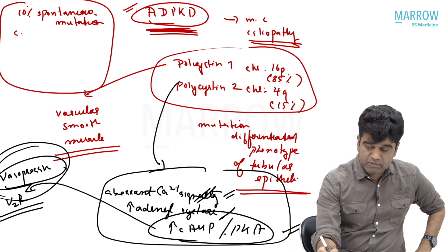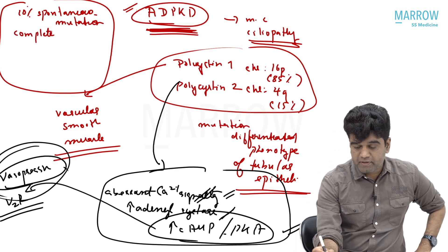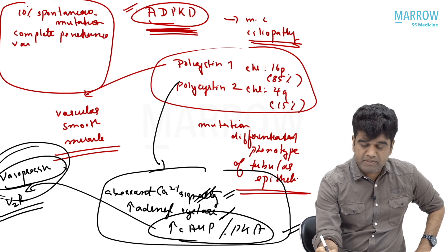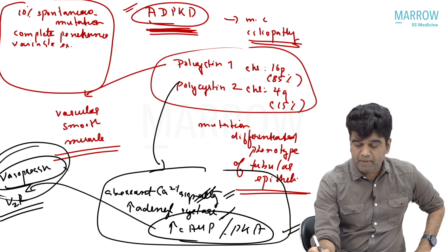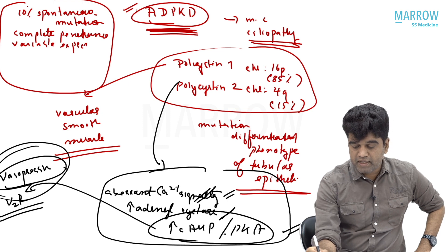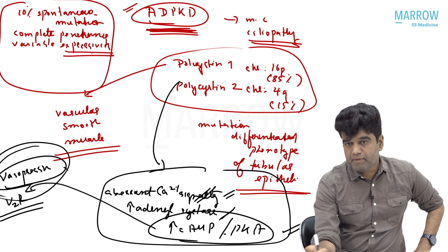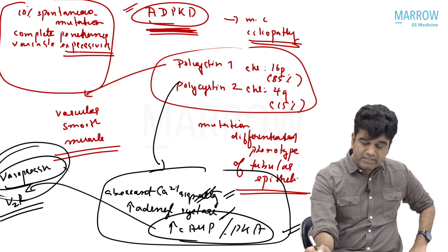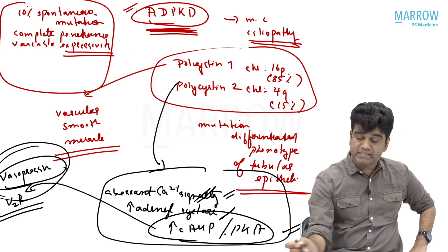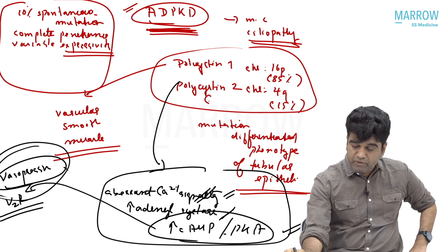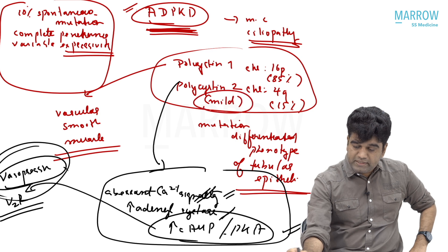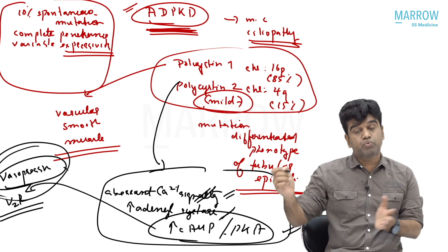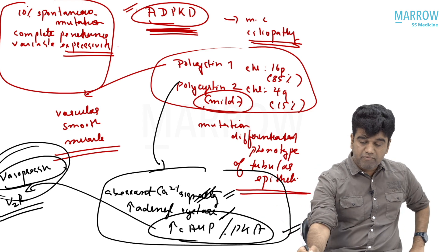This is a disease which has complete penetrance but variable expressivity. The meaning of complete penetrance and variable expressivity is that everybody will get the disease, but it can be mild or it can be severe. Polycystin 2-related disease is actually mild, while polycystin 1 is more severe. That is the meaning of variable expressivity.